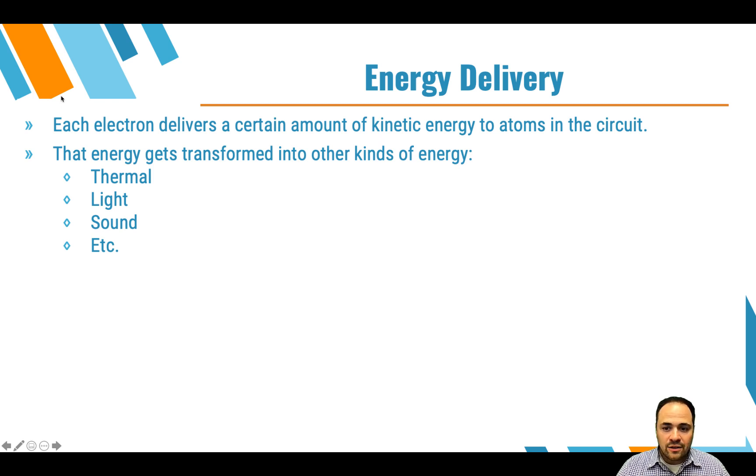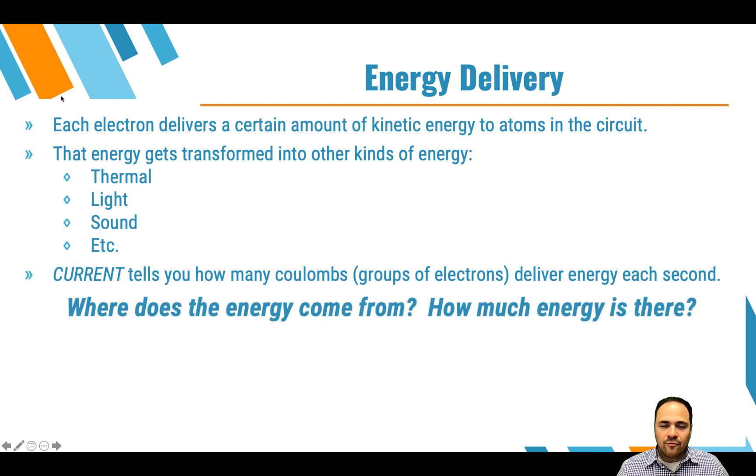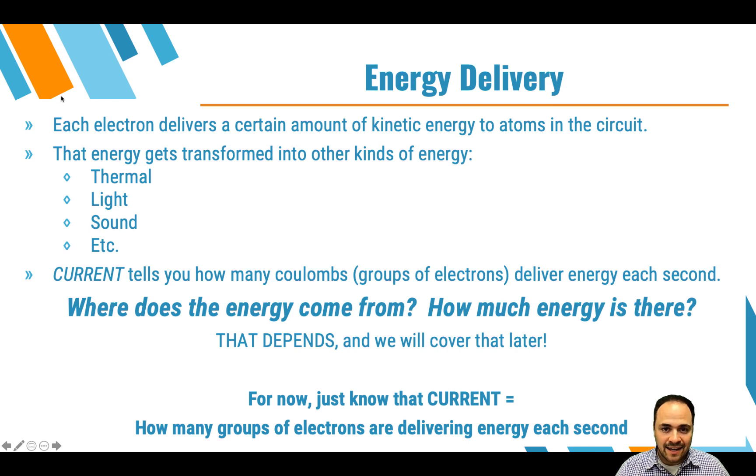Now, current tells us how many coulombs or groups of electrons deliver energy each second. But where does that energy come from, and how much energy is there? That's something that we are going to talk about later, and it depends. So for now, just know that current is how many groups of electrons that are delivering energy every second.